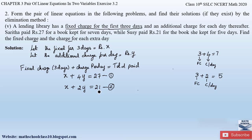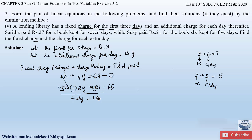Now let us find the solution by the elimination method. The variable x in both equations has coefficient 1, which is equal, so we eliminate x. Since x has a plus sign in both equations, we subtract the second equation from the first. This gives: (4y minus 2y) equals (27 minus 21), so 2y equals 6, therefore y equals 3.